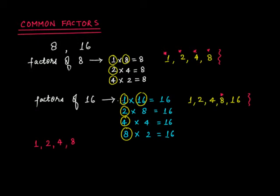You can do this similarly for three or four numbers. Let's check for three numbers — suppose I add one more number, say 15. So now we have 8, 16, and 15. We already have the factors of 8 and the factors of 16. What about the factors of 15?